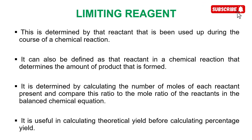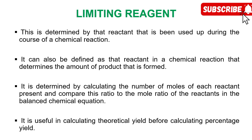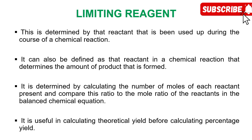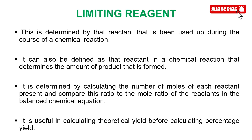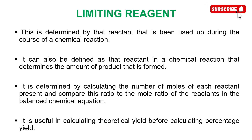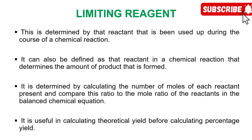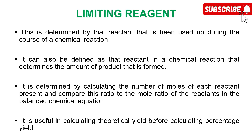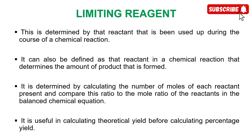The limiting reagent is also defined as that reactant that determines the amount of product formed during a chemical reaction. To determine the limiting reagent when you have more than one reactant, calculate the mole ratio of each reactant participating in the reaction. The one with the least mole ratio is the one being used up — that is the limiting reagent.